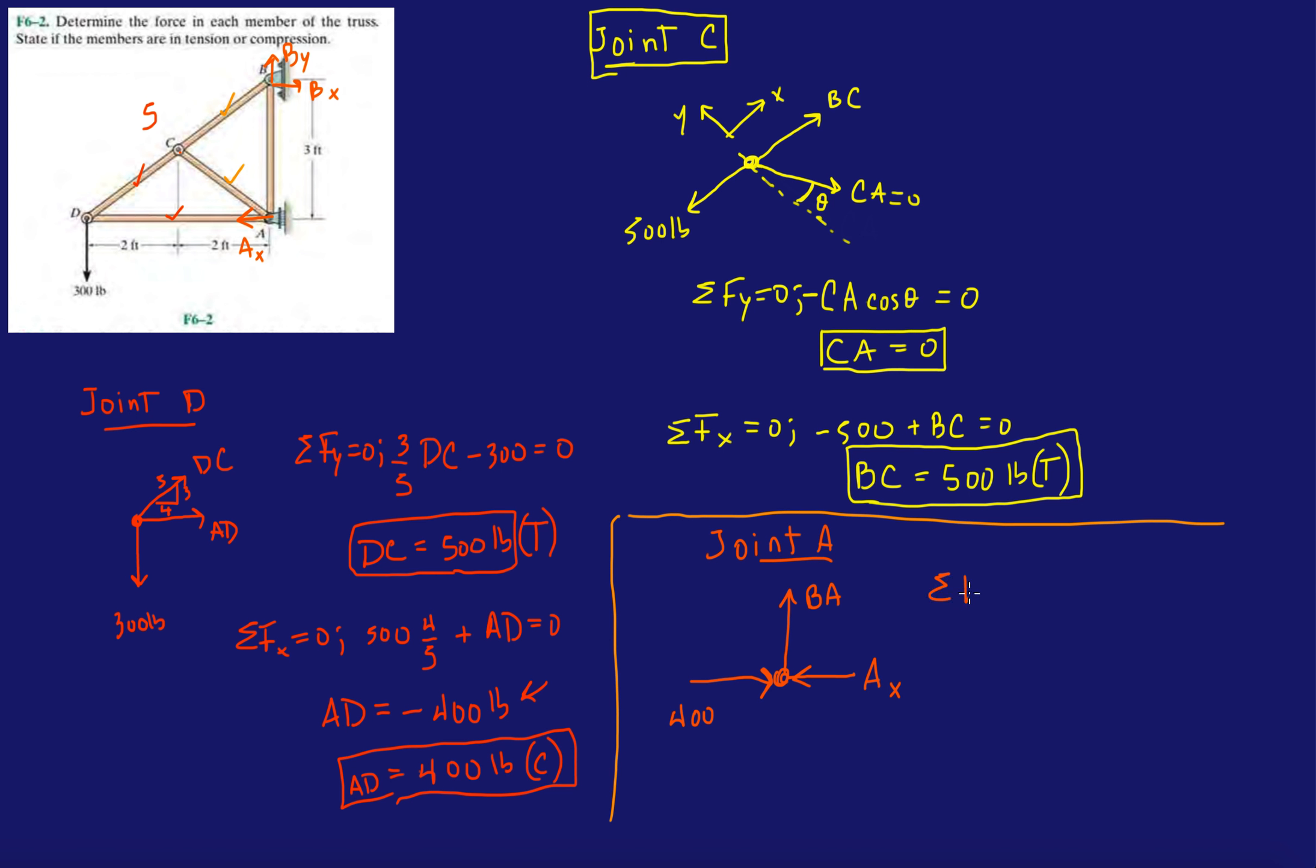So, we should just get an A_X in this case. So, we look at the Y equation here, right? I get that BA is zero, so we have two zero force members. And then, that's it.